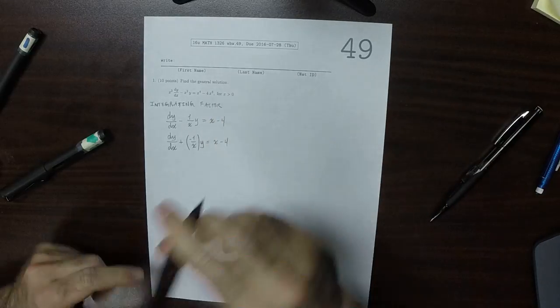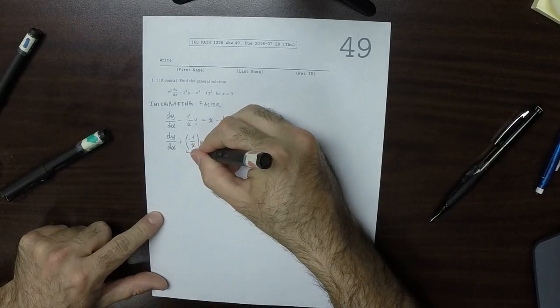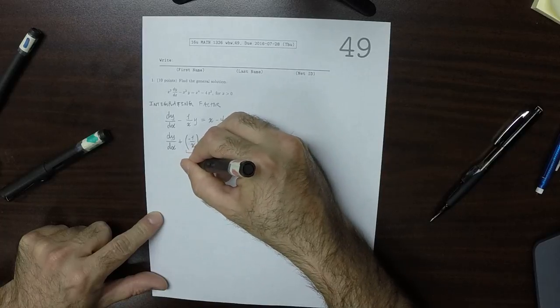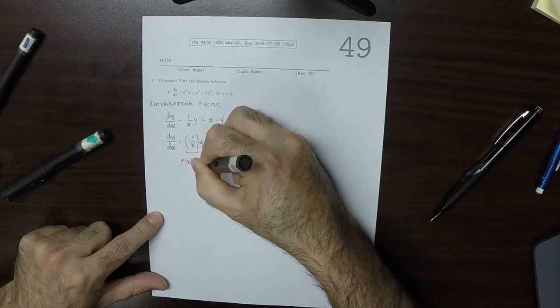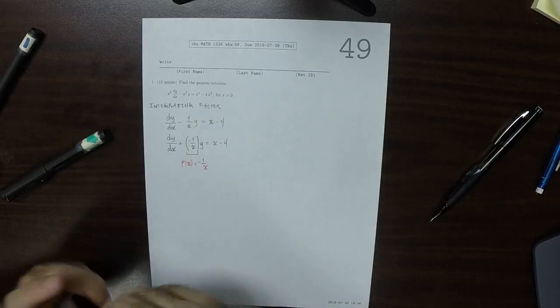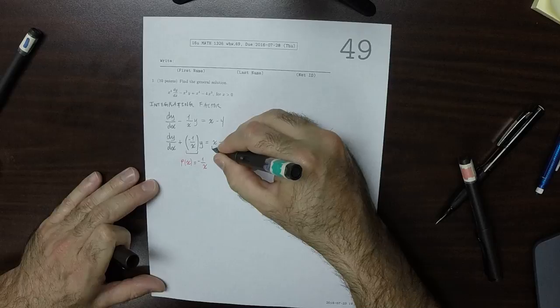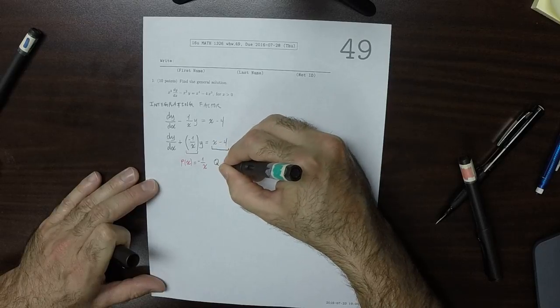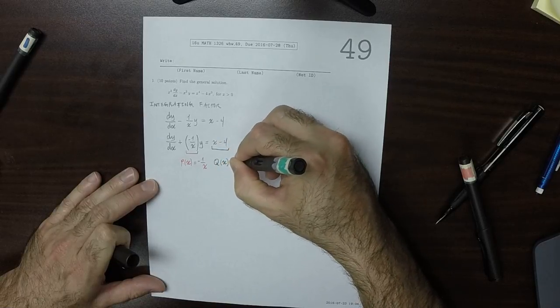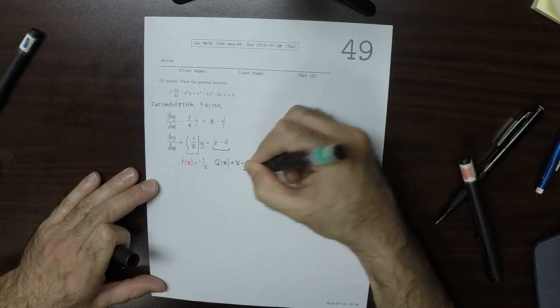So that's telling us that p of x is negative 1 over x, and q of x is x minus 4.